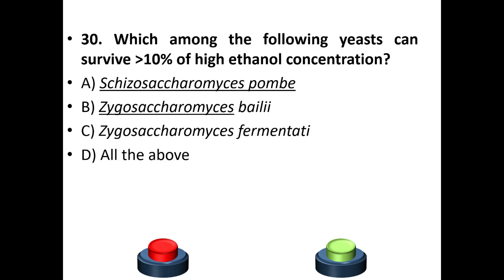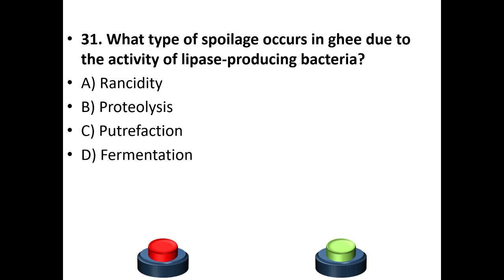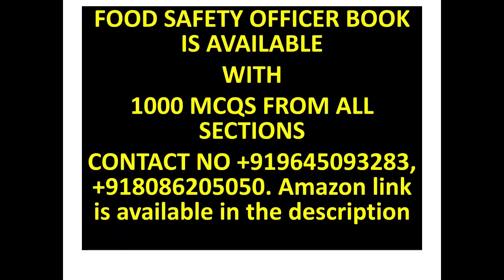Thirtieth question: which among the following yeasts can survive greater than 10% high ethanol concentration? A: Schizosaccharomyces pombe. B: Zygosaccharomyces bailii. C: Zygosaccharomyces fermentati. D: All of the above. Answer is D — all of the above. Thirty-first question: what type of spoilage occurs in ghee due to the activity of lipase-producing bacteria? A: Rancidity. B: Proteolysis. C: Putrefaction. D: Fermentation. Answer is A — rancidity.